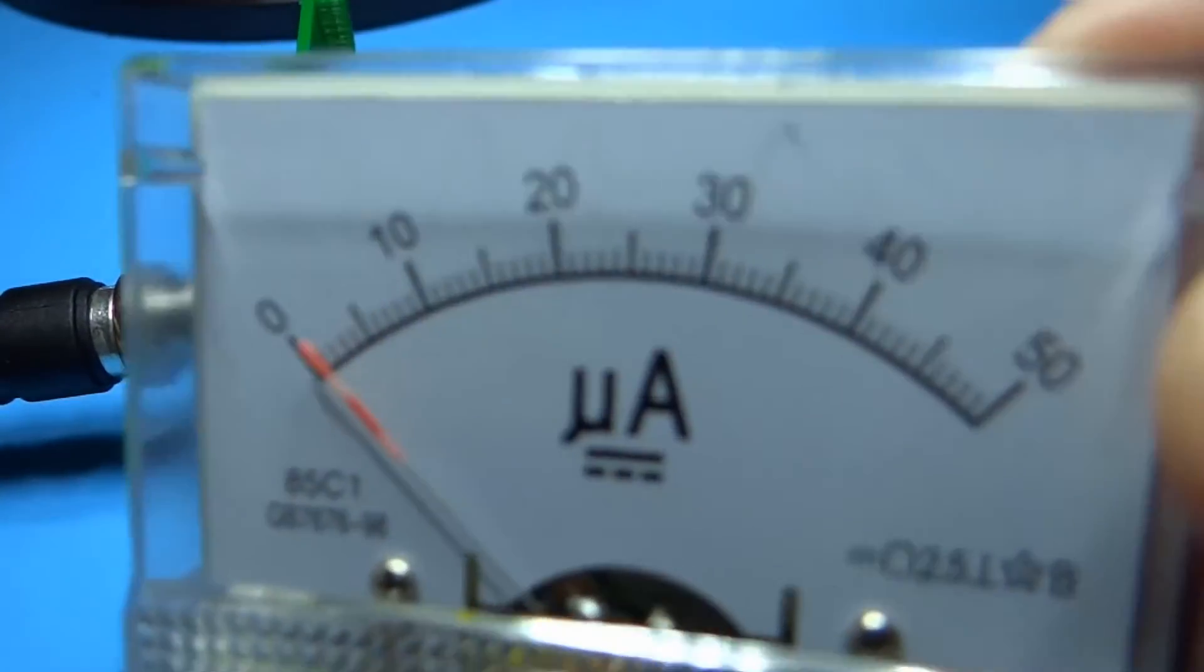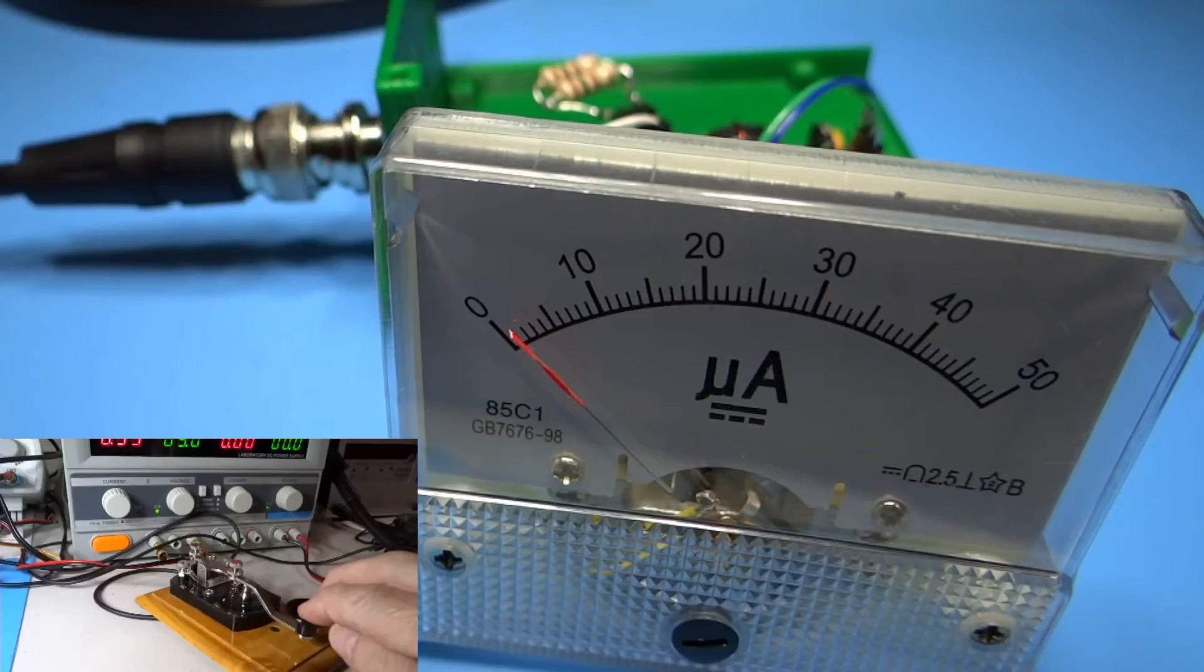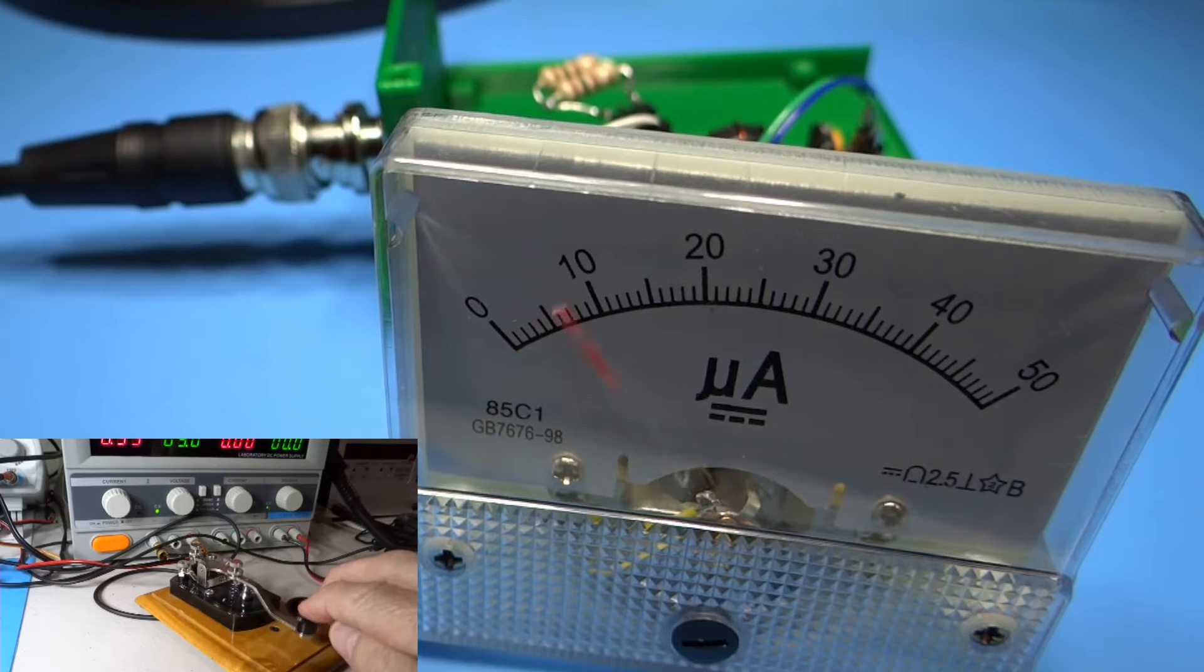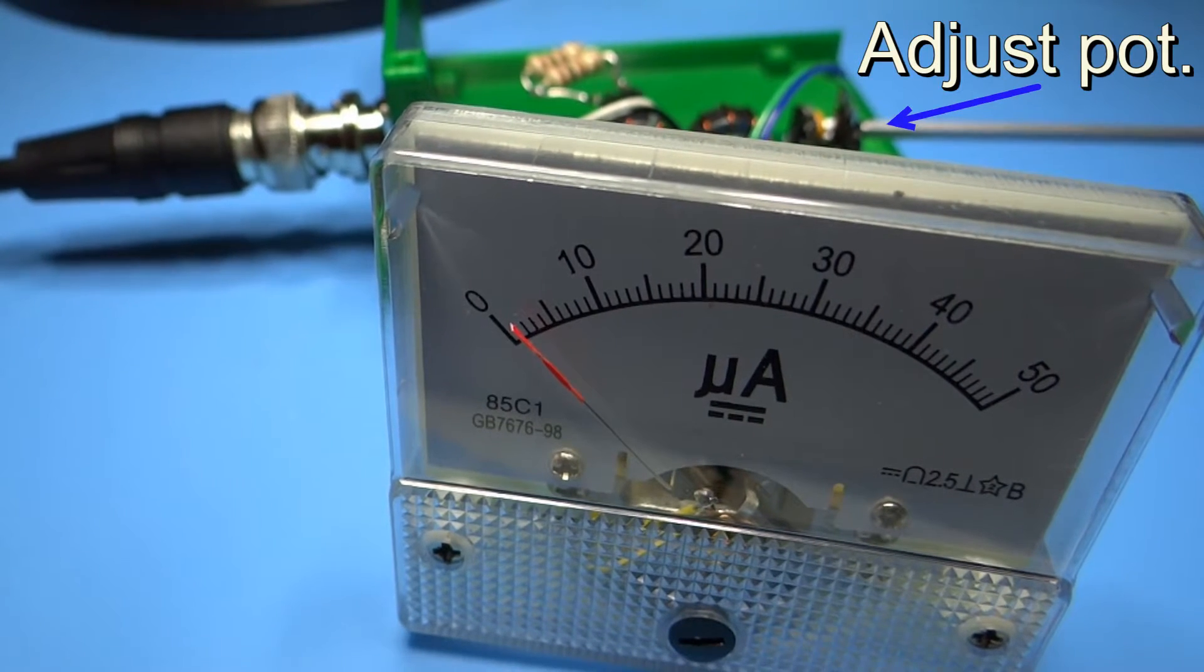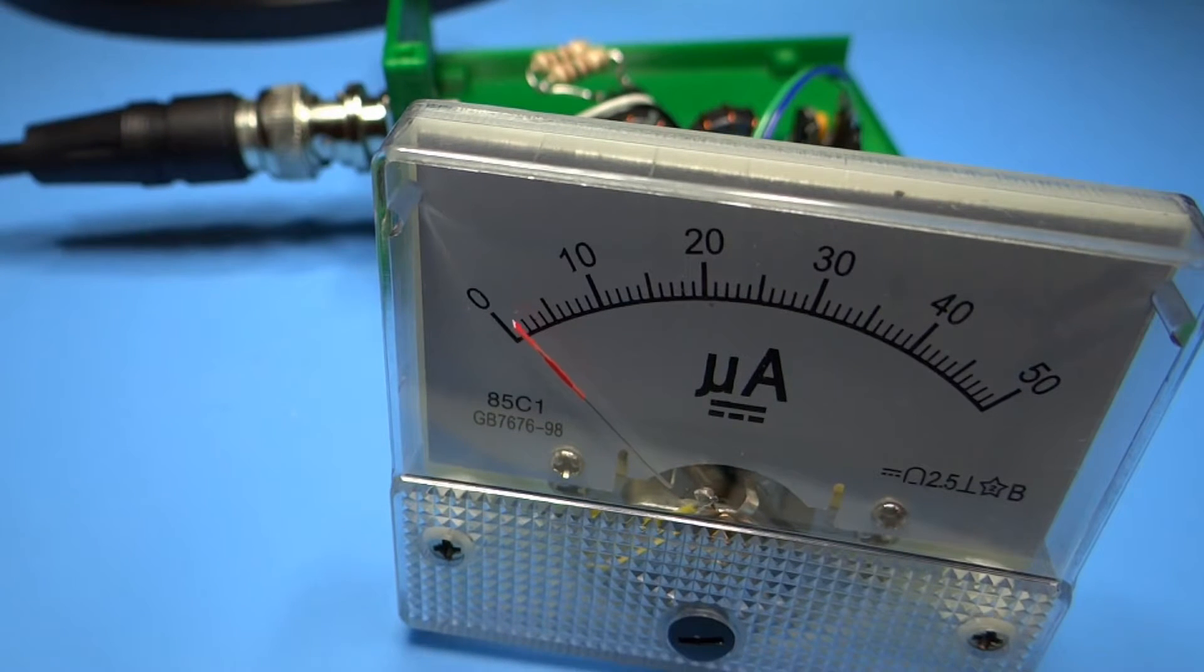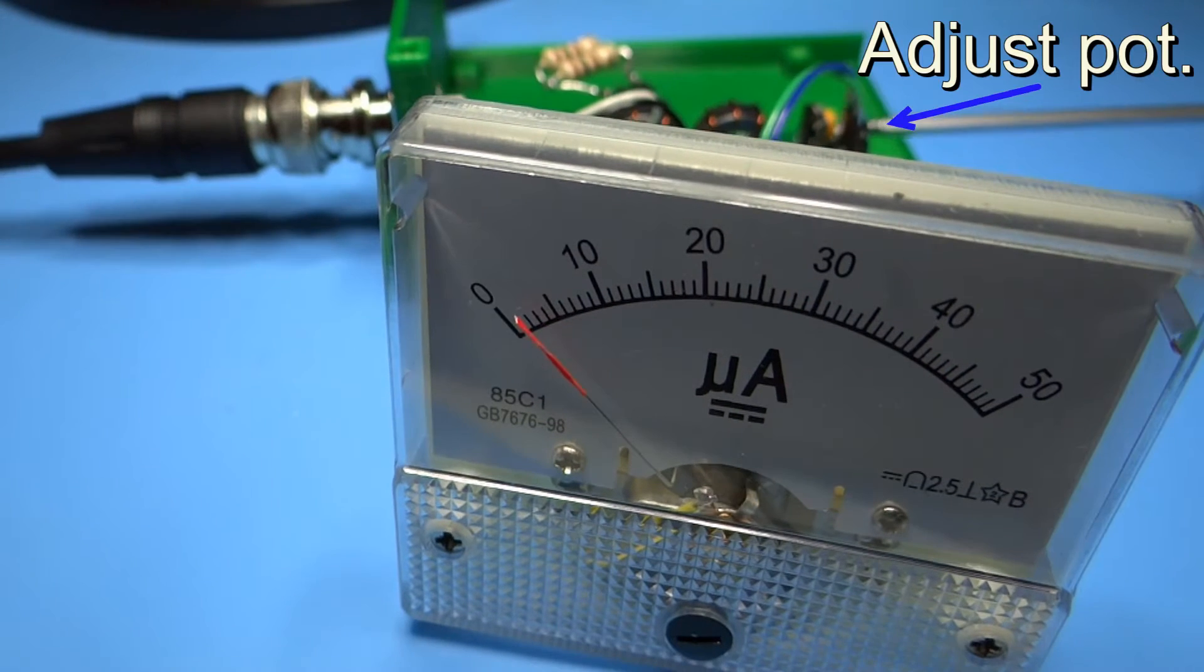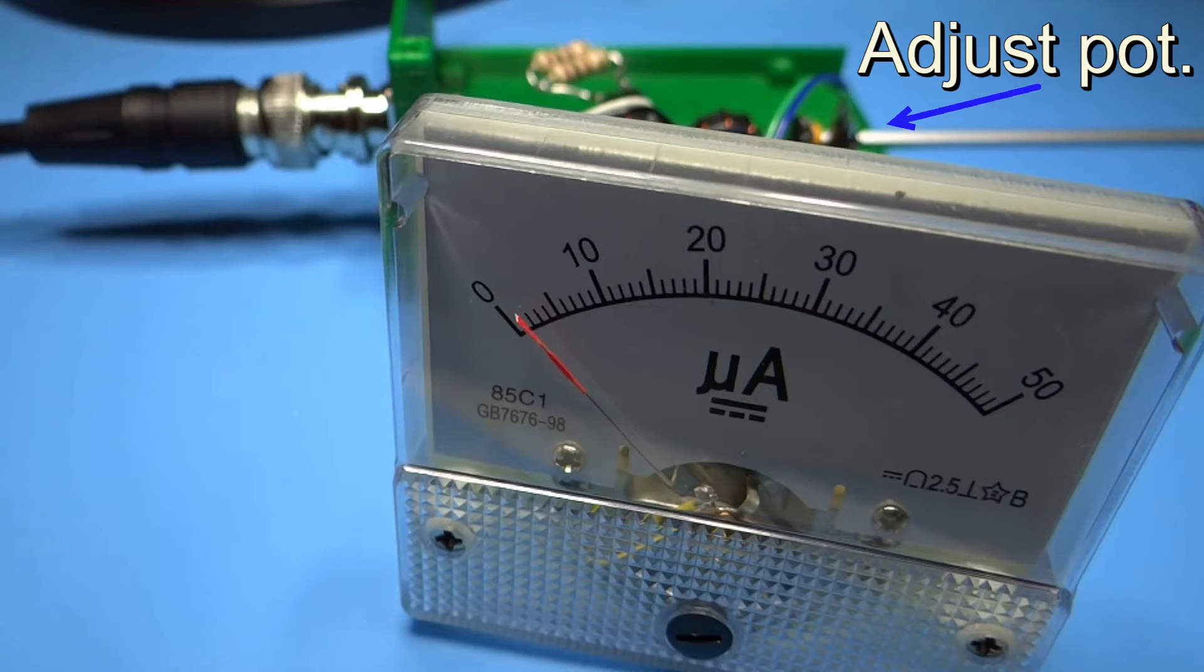Each arm of the bridge has a variable resistor that can be trimmed to increase or decrease the value displayed on a DC microamp meter for a given RF input and load. After adjusting for a suitable reading in the forward direction...